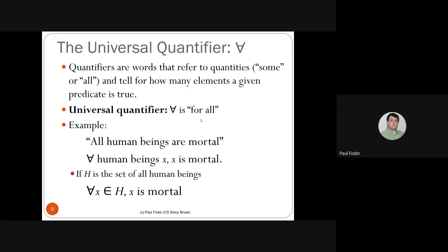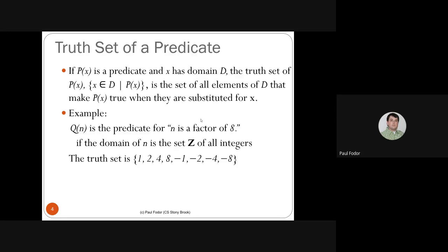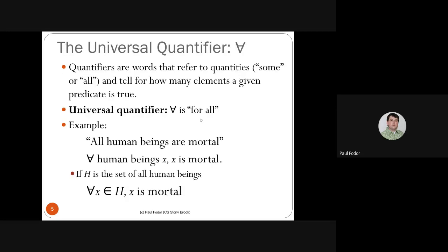The truth set is the subset of the domain that makes the predicate true. The universal quantifier says that the truth set equals the entire domain — meaning the predicate is true for the entire domain. That's what the universal quantifier expresses.